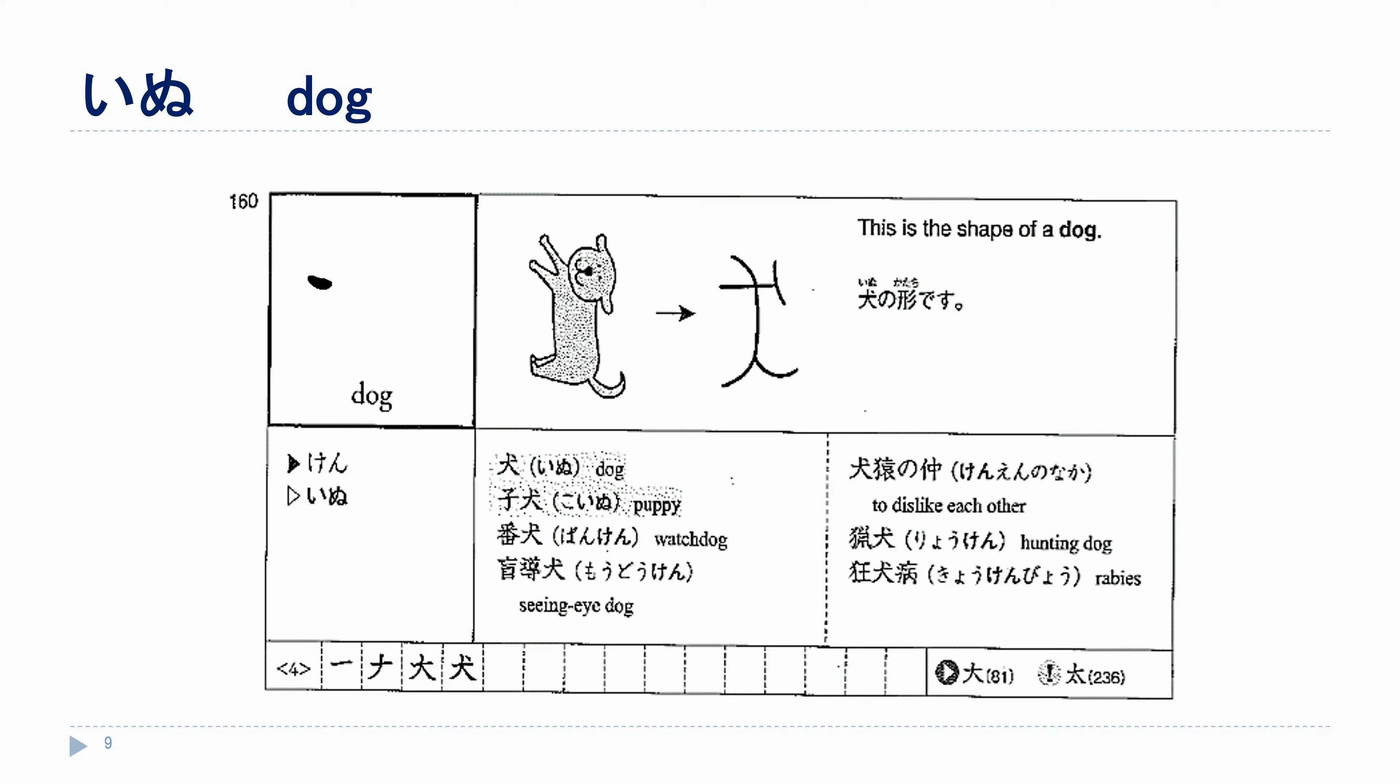So, いちにさんよん. いちにさんよん. That is all the kanji from chapter 13.